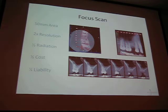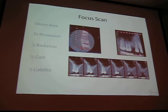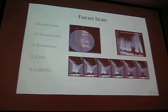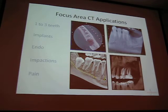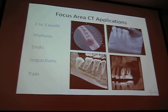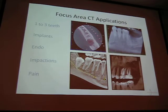Just like taking a picture with your camera: if I take a picture of the whole room I can see everybody, but if I zoom in on just one person that's the whole frame — it's going to be a little higher resolution. By zooming in you get better resolution, and it's lower radiation. For us it's also lower cost — we charge $125 for the small scans, $285 for everything else. And again, it's lower liability because you're doing a small area. It really applies to one to three teeth — implants, endo, impactions — really when you're isolating an area, or when somebody's in pain and they don't know why. That's really the sweet spot of it.